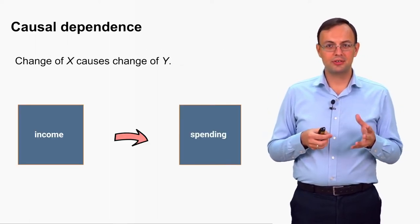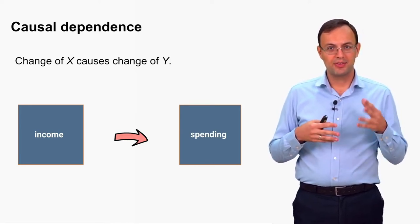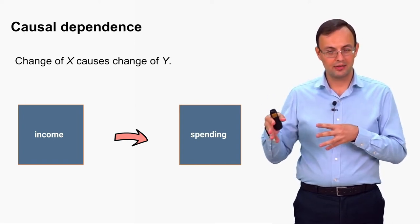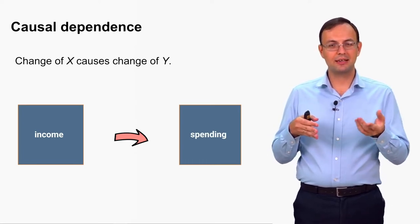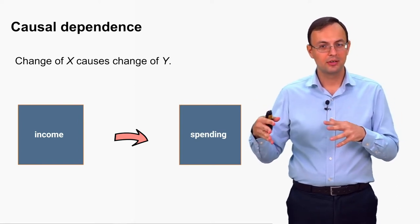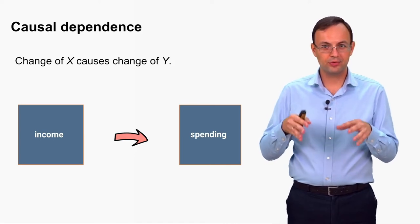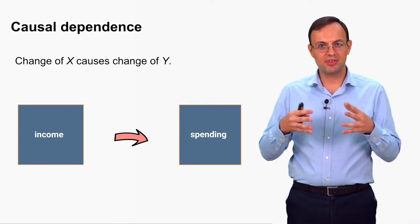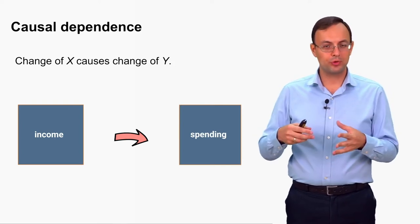Another type of dependence is causal dependence. This is a situation when a change of x causes a change of y, but there is no formula. In the case of functional dependence, there is a formula — or maybe we haven't found it, but it exists — that describes the relationship. In the case of causal dependence, there is no such formula.